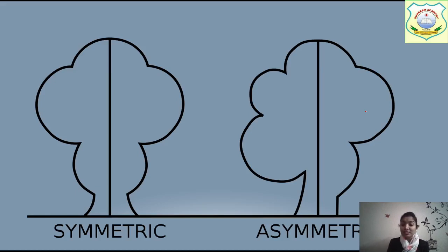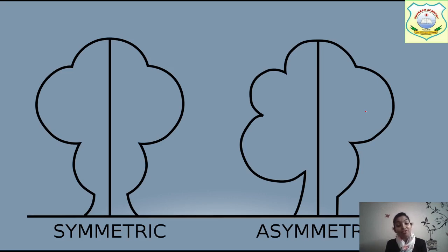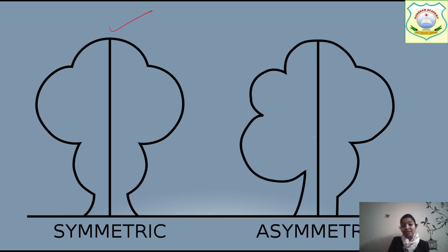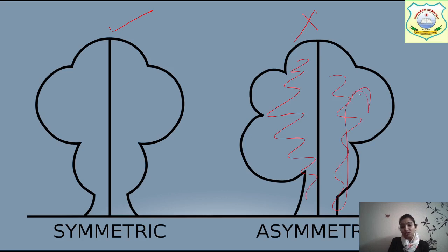Now what is symmetry and what is asymmetry? You have to understand: what is a symmetrical figure and what is an asymmetrical figure? Symmetrical figures are those which are exactly the same or have a mirror image. Now in this tree you can see it is exactly the same on both sides — this is symmetry. But in this figure, you can see this tree is totally different; this part and this part are totally different, so this is asymmetrical.